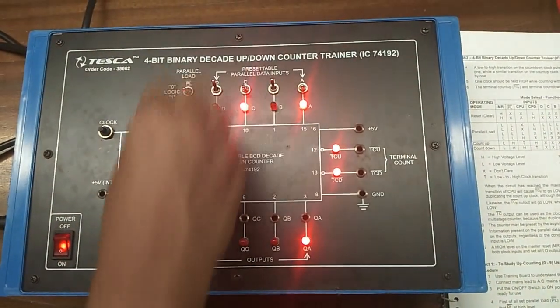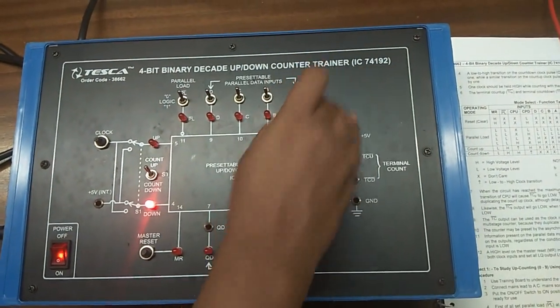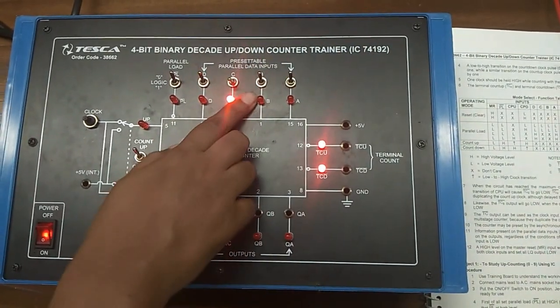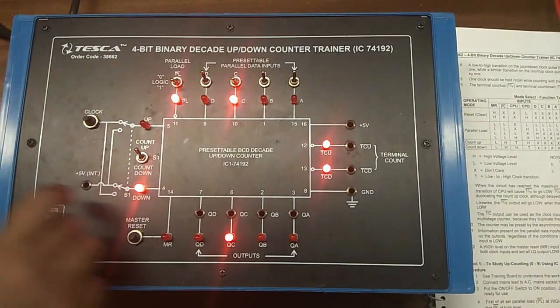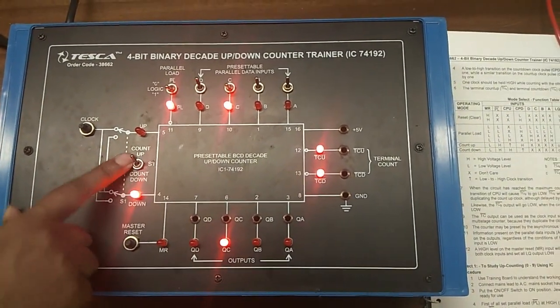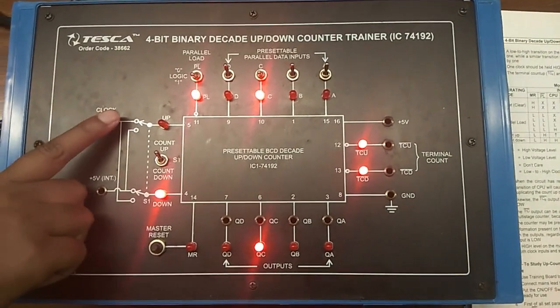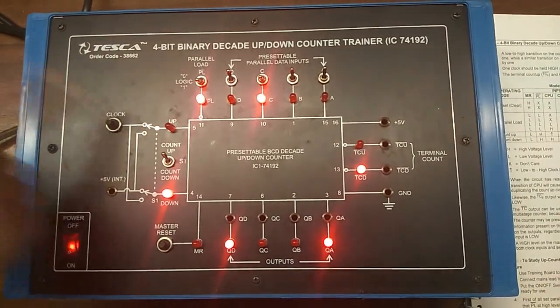Similarly, I have selected now 4 and keep the PL switch at 1 position. Select the switch in count up position and now it will start counting from 4: that is 5, 6, 7, 8, 9.